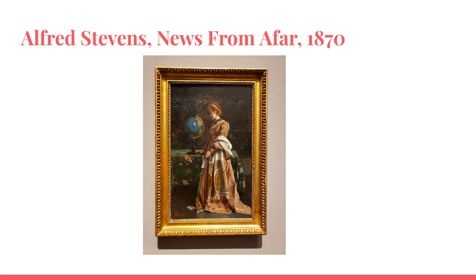In News from Afar, we see the importance of communication and connection in Victorian society. This painting depicts a woman reading a letter and looking worried as she is waiting for news from someone important to her. This painting emphasizes the domestic sphere and woman's role in the household. Alfred Stevens' News from Afar is culturally significant as it highlights the Victorian era's view on domesticity and women's roles as caretakers of the household. In the Victorian era, women were expected to prioritize their duty as wives and mothers and were often confined to the home, highlighting the importance of the home in Victorian society.